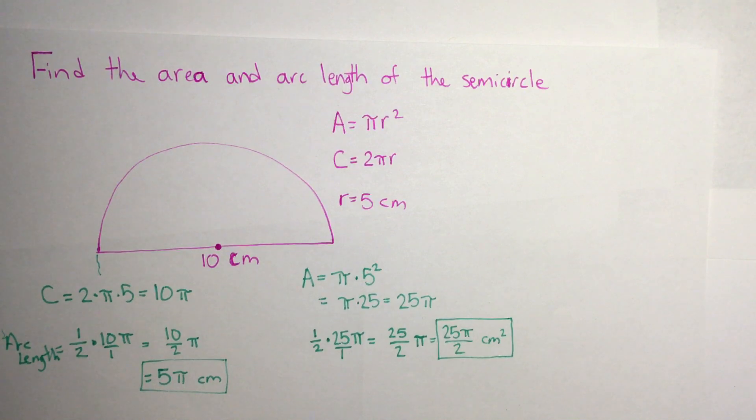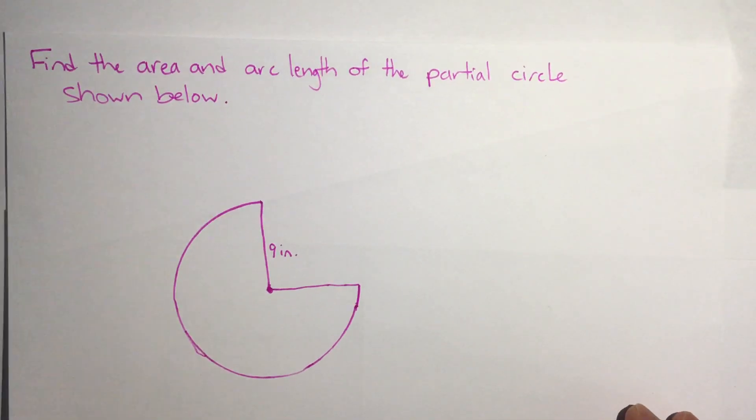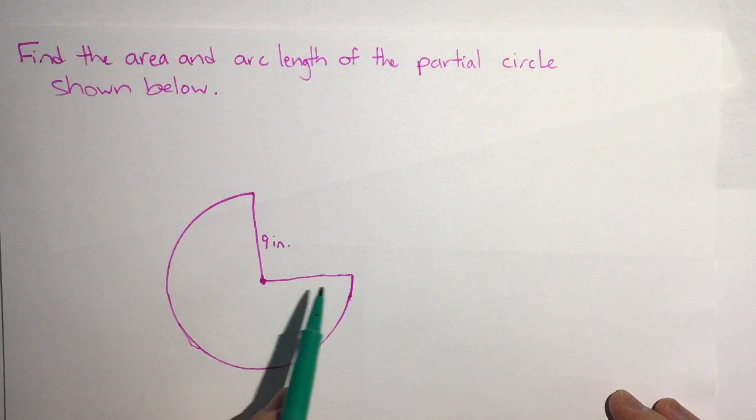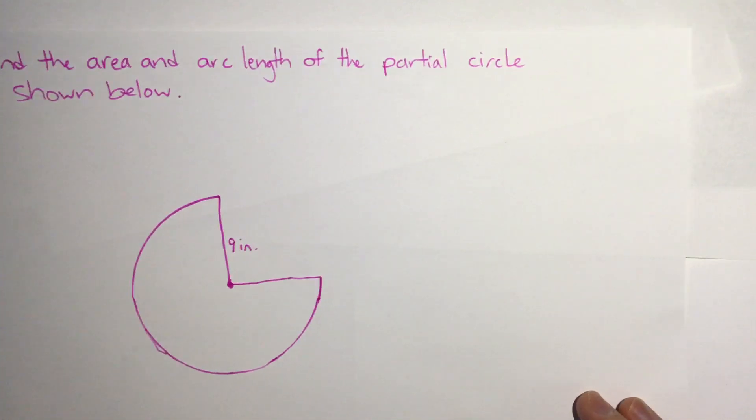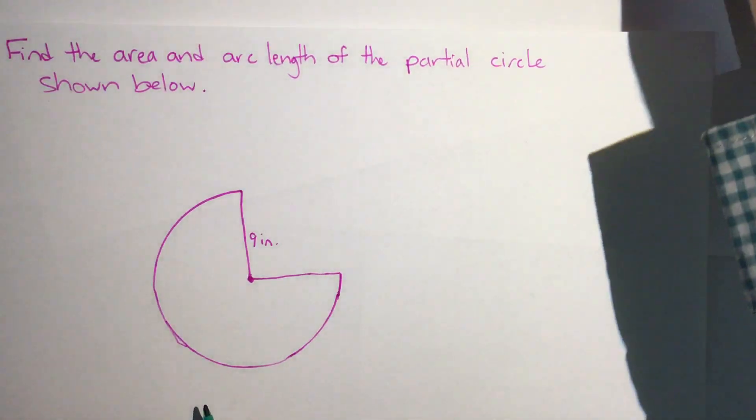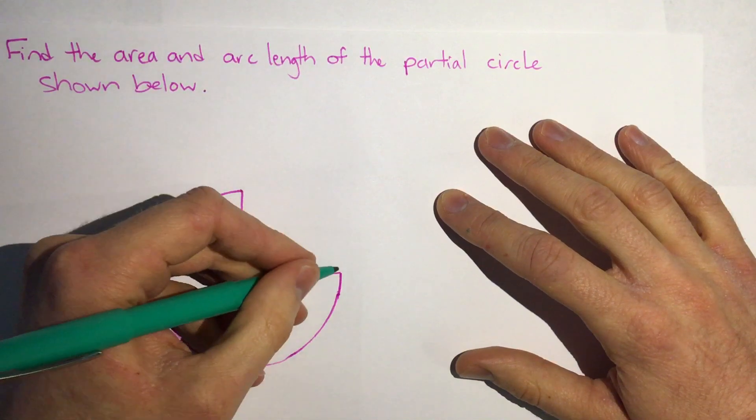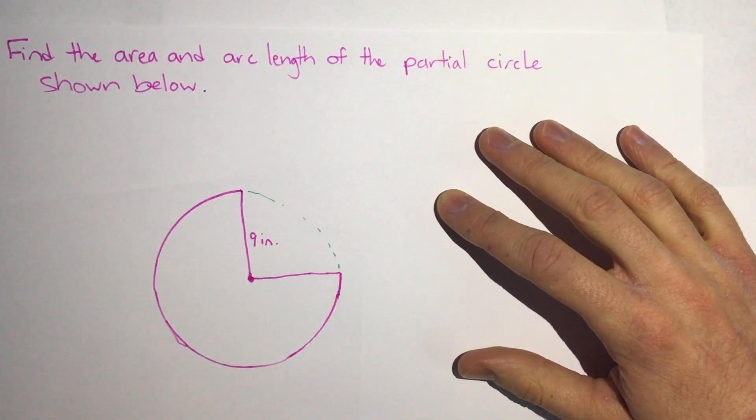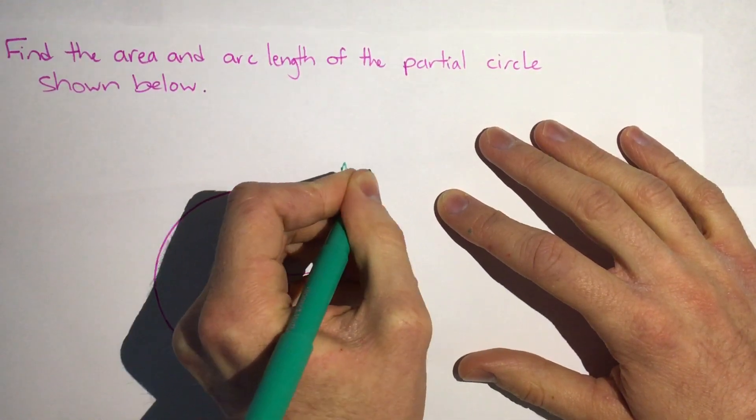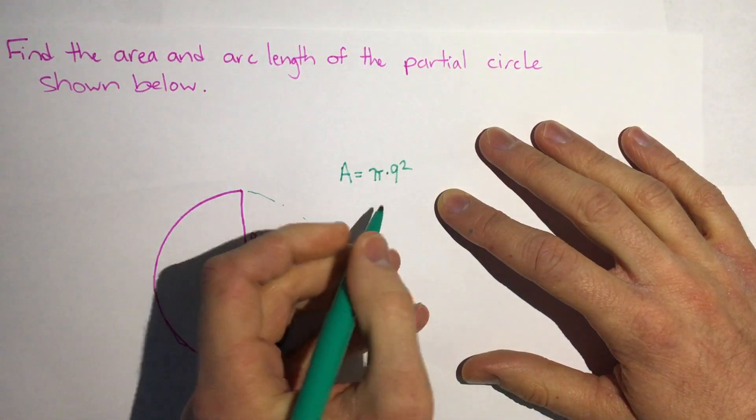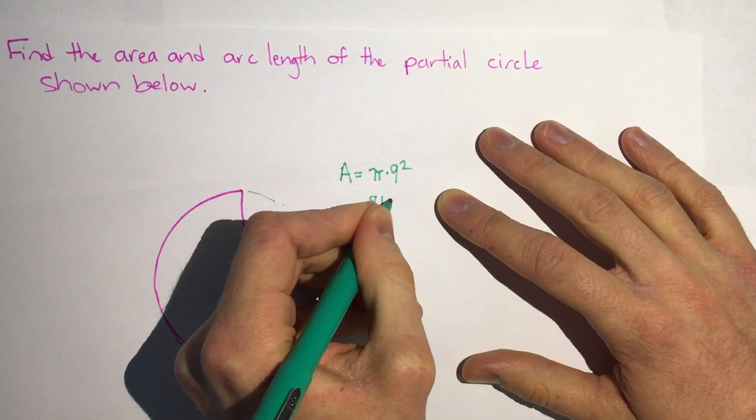So this is how we do a half circle. Let's look at what happens with another size. In this case a partial circle, it says find the area and arc length of the partial circle shown below. Well we can see that this is 3 quarters or 3 fourths of a full circle. So if we're gonna do that again we want to find the area of as though it was a full circle to start with. So the area would be pi times 9 squared because our radius here is 9 inches. 9 squared is 81 so we have 81 pi.